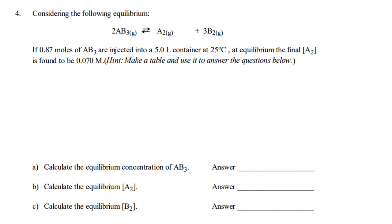Okay, question number four. Here's our equation. 0.87 moles of AB3 are injected into a 5 liter container at 25 degrees Celsius. Again, the 25 degrees Celsius is just saying that an equilibrium is established and the temperature is not changing. So, we can do a KEQ calculation. But other than that, that number you do not use for any calculation. At equilibrium, the final A2 is found to be 0.07 moles. So, we're going to make a table.